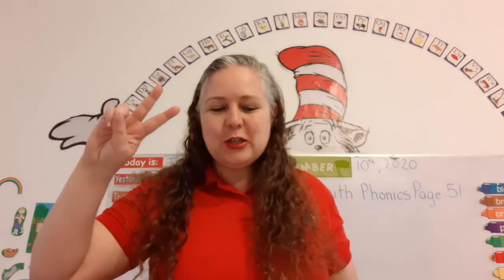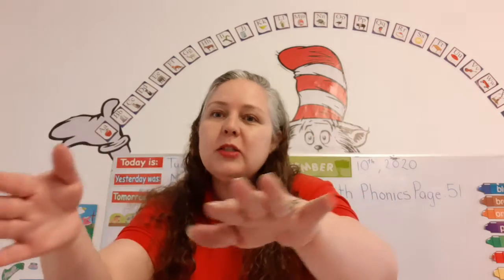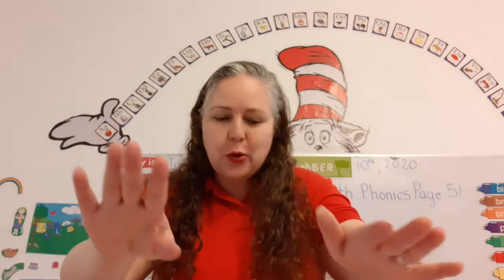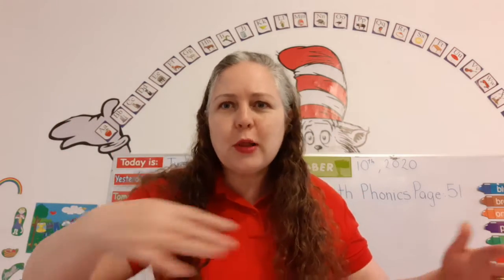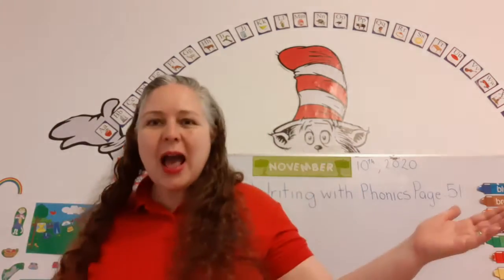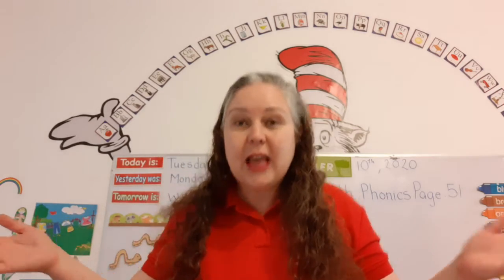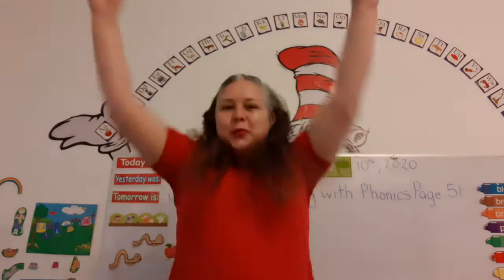One, two, three. Autumn wind begins to blow. Colored leaves fall fast and slow, twirling, whirling all around, till at last they touch the ground.